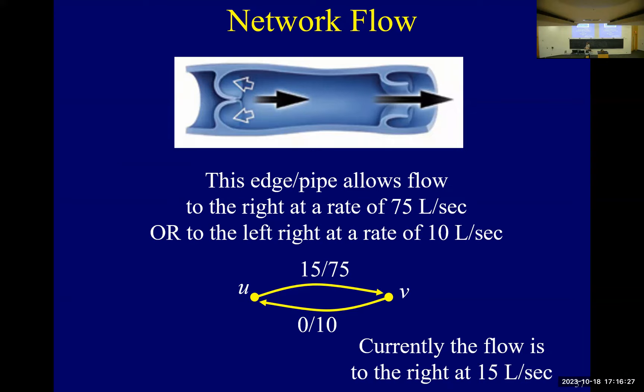So we want to think about not only how much flow do we currently have, but how we're allowed to change that flow. So you see, how much can I increase the flow by? Well, it's clearly 75 minus 15. Now you ask, how much can I decrease the flow by? And you might say 15. Anybody want to give me a better answer? You might say 10. Anybody want to give me a better answer?